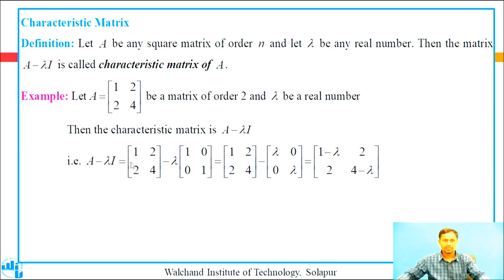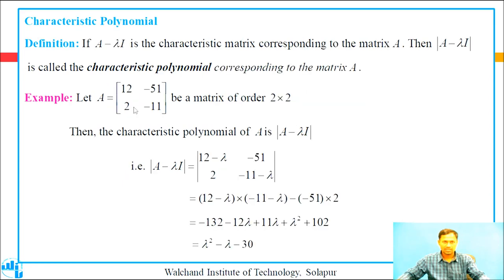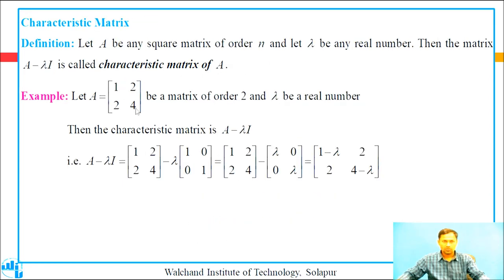That is, A minus lambda I equals the matrix with first row [1, 2], second row [2, 4], minus lambda times the identity matrix with first row [1, 0], second row [0, 1]. This equals: subtracting corresponding elements gives first row [1 minus lambda, 2], second row [2, 4 minus lambda]. In other words, we subtract lambda from the diagonal elements of A, giving first row [1 minus lambda, 2], second row [2, 4 minus lambda].